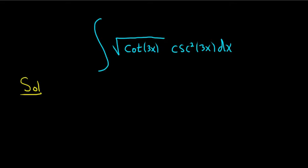So if you were to let u be cotangent, then the derivative of cotangent is negative cosecant squared, so that seems to be a good route to take. So we'll start by letting u be equal to the cotangent of 3x.